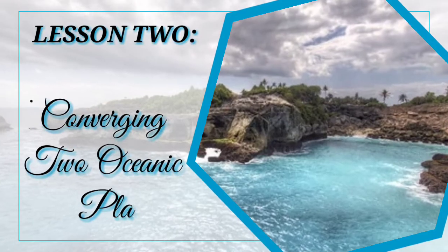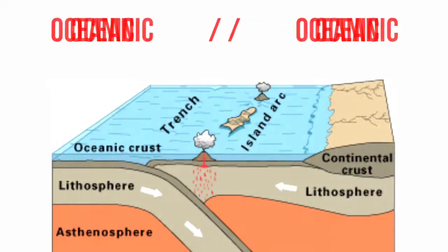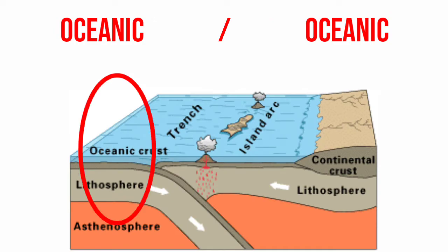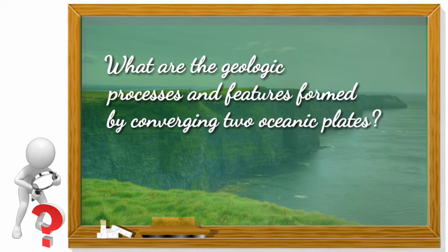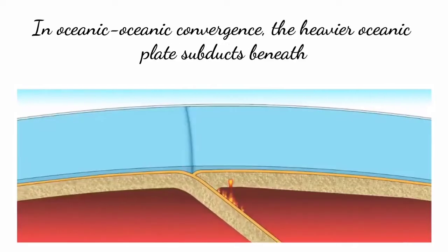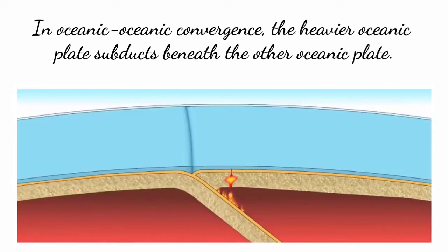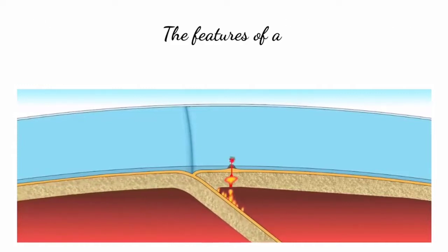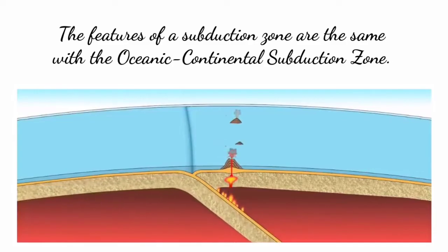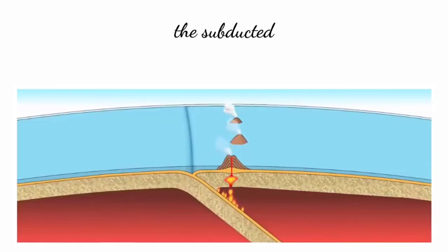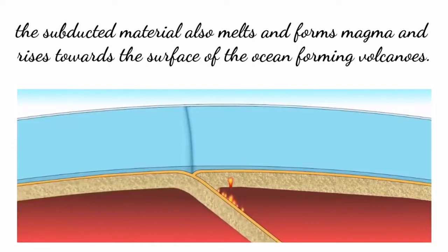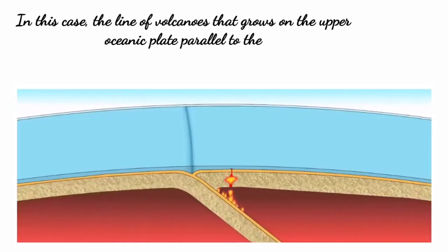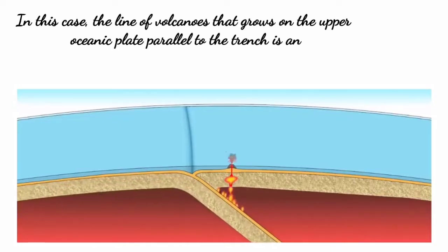Now let's discuss lesson two: converging two oceanic plates. This type of convergence happens when an oceanic crust collides with another oceanic crust. In oceanic-oceanic convergence, the heavier oceanic plate subducts beneath the other oceanic plate, also creating a subduction zone. The features of a subduction zone are the same as with the oceanic-continental subduction zone. The subducted material also melts and forms magma, rising towards the surface of the ocean and forming volcanoes. The line of volcanoes that grows on the upper oceanic plate parallel to the trench is called an island arc.